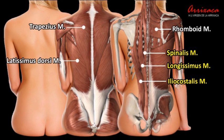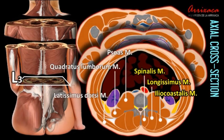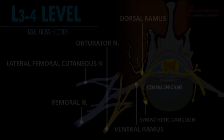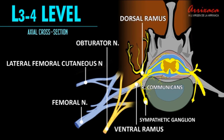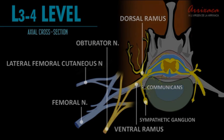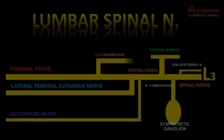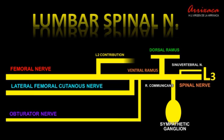The erector spinae muscle is a symmetric anatomical structure which consists of three columns of muscles, each running parallel on either outer side of the vertebral column at the lumbar, thoracic, and cervical region. Each lumbar spinal nerve branches into two different nerve bundles, the dorsal and ventral rami. The latter eventually converge to form the terminal branches of the lumbar plexus.